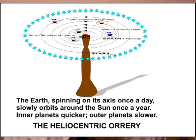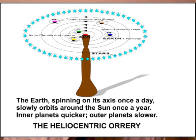Many years ago they used to make — and I think they may still make them — mechanical models of the planetary system in which they would put the Sun on a pedestal, and with long arms coming out from that central pedestal they would have the different planets at different distances from the Sun. Those long arms would rotate very slowly, each one — the near ones rotating faster and the outer ones rotating slower. And from each of those planets on the ends of the arms would be a very small ball representing the Moon or moons going around that particular planet.